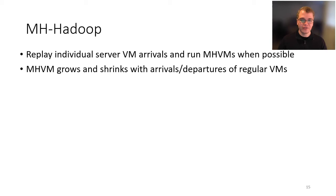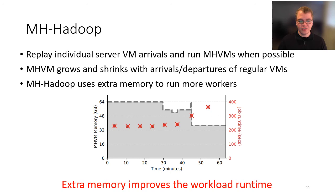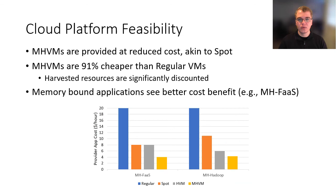Looking at MHHadoop in more detail, we replayed individual server VM arrival events from our cluster and ran MHVMs during the replay when possible. For a single example, MHHadoop uses the extra memory assigned to it to run more workers. At the beginning it has its full allocation of harvestable memory and achieves the best job runtimes. As it has to give up memory, job runtime increases because it has fewer workers, but it's still making throughput and running — and it can directly use extra memory resources to improve job runtimes.